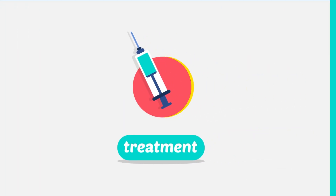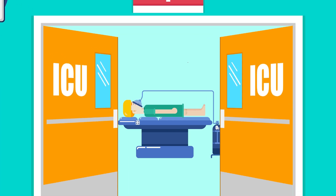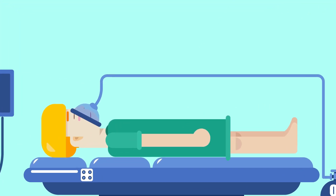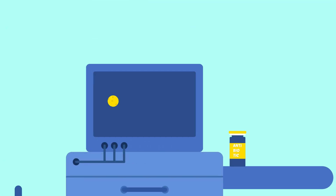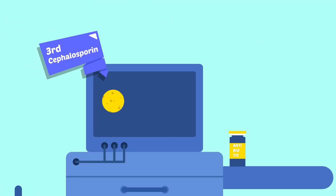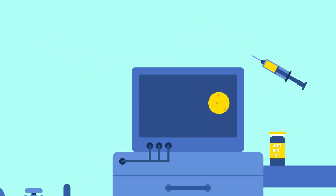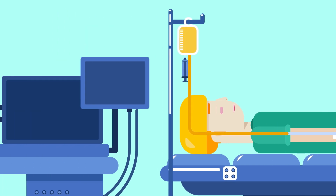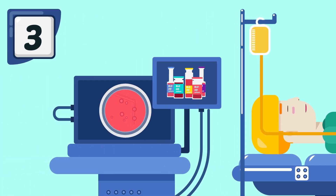Treatment: 1. Hospitalization is essential because of the danger of respiratory obstruction. 2. Antibiotics: Ampicillin or 3rd generation cephalosporins are effective against H. influenzae and are given by parenteral route, IM or IV, without waiting for results of throat swab and blood culture.